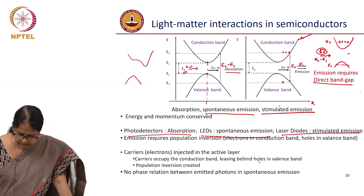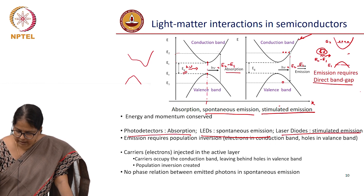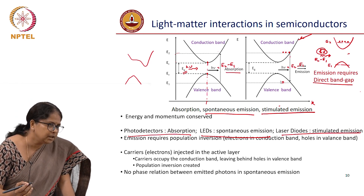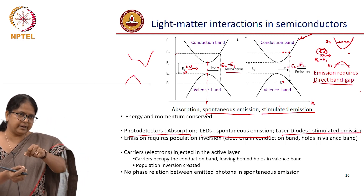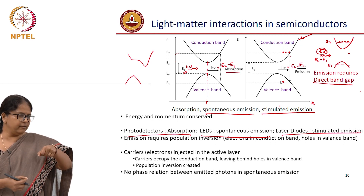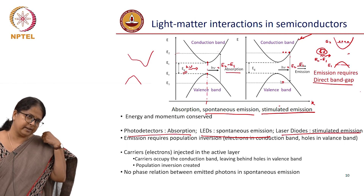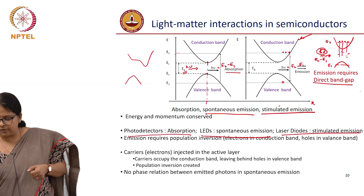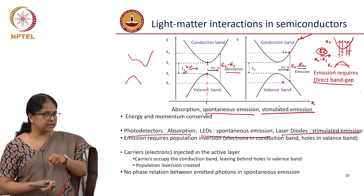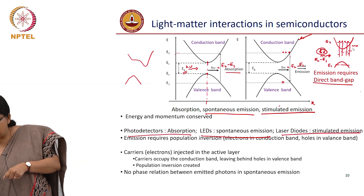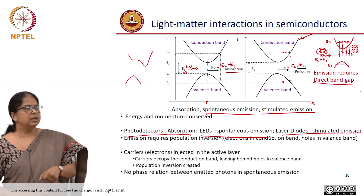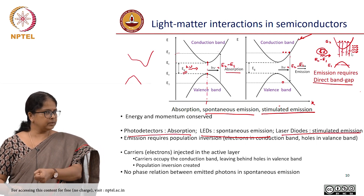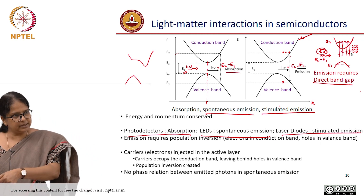The difference between spontaneous and stimulated emission is that in spontaneous emission the electron-hole recombinations are happening at random, which means there is no phase relation between one recombination and another — all are happening randomly, so the photons are emitted at different phases. Whereas in stimulated emission, one photon can stimulate the recombination of multiple electron-hole pairs simultaneously, resulting in all the emitted photons being in phase. So you can generate coherent light because of stimulated emission. The light emitted by an LED is always incoherent.